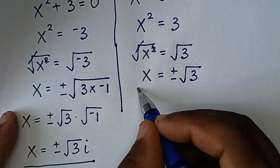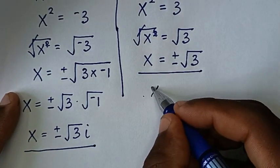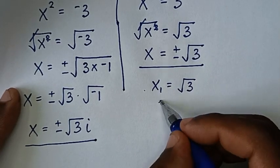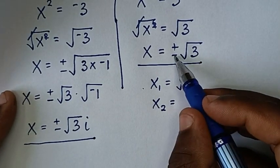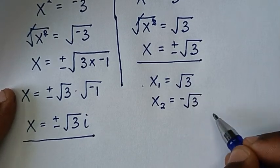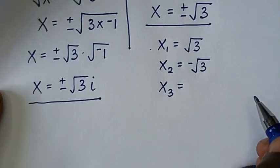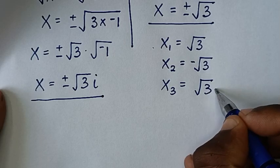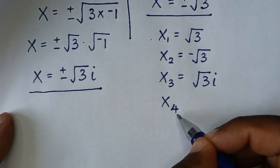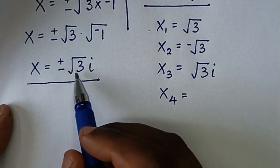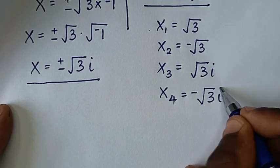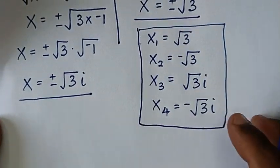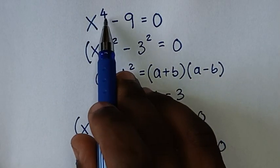Here we have two real solutions. Therefore, the four solutions are: x = √3, x = −√3, x = √3 · i, and x = −√3 · i. We have a total of four solutions because the equation has a power of four.